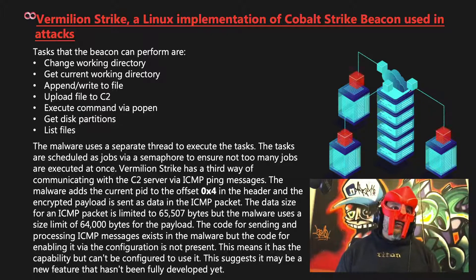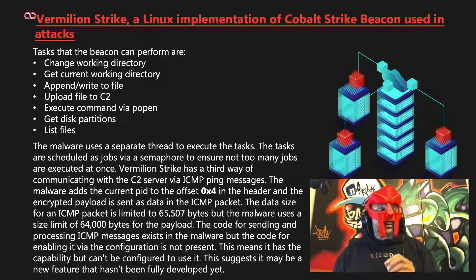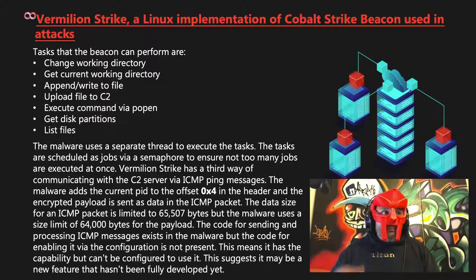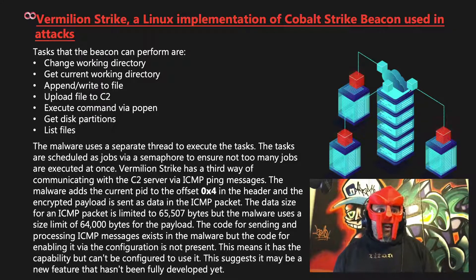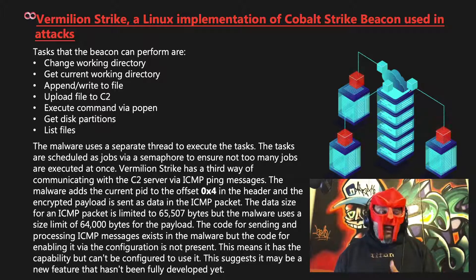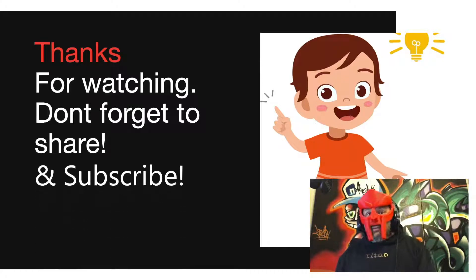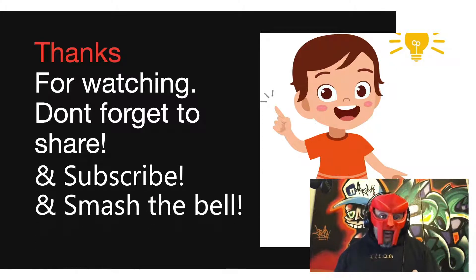Vermillion Strike is not the only Linux port of Cobalt Strike's beacon. Another example is the open-source project Geacon, a Go-based implementation. Vermillion Strike may not be the last Linux implementation of beacon either. So be aware of your landscape, check your Red Hat code-based servers, and review your current infrastructure monitoring processes to see what changes you need to make to catch this on any servers you have. Thanks again for watching — don't forget to share and subscribe, and I'll see you on the next episode.